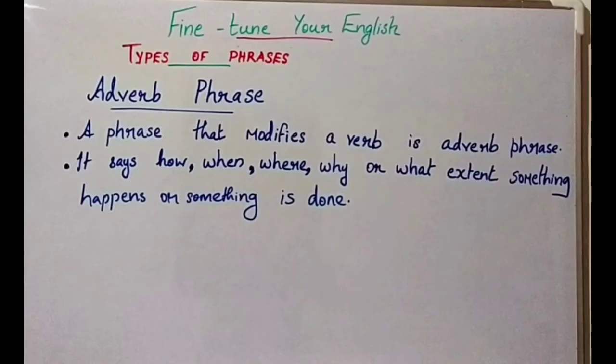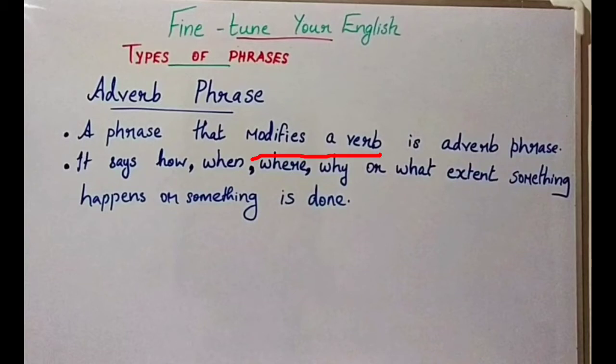Let's begin with the explanation of Adverb Phrase. What is an Adverb Phrase? An Adverb Phrase is a phrase that modifies a verb, and it says how, when, where, why, or what extent something happens or something is done. Just like an Adverb, an Adverb Phrase also modifies a verb in a sentence.